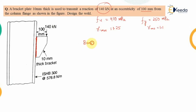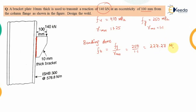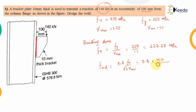Now the bending stresses used in the case of welding are of two types. For the butt weld or groove weld, the bending stress is yield strength divided by the factor of safety for material: 250 divided by 1.10, giving 227.27 MPa. For the fillet weld, it is given by 0.8 × Fu / (√3 × γ_mw), which is 0.8 × 410 / (√3 × 1.25), coming out to 151.5 MPa.